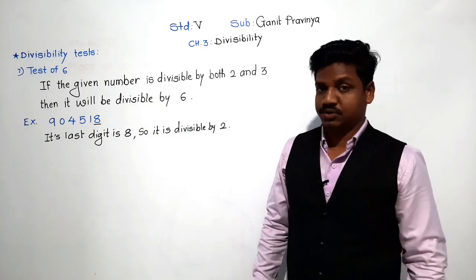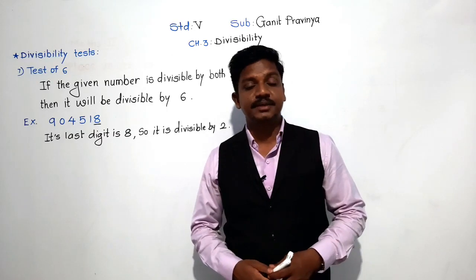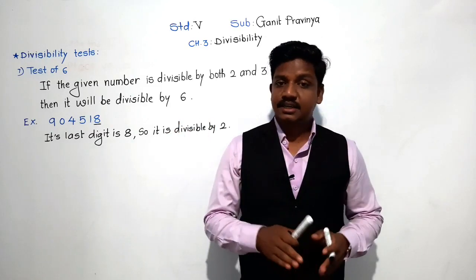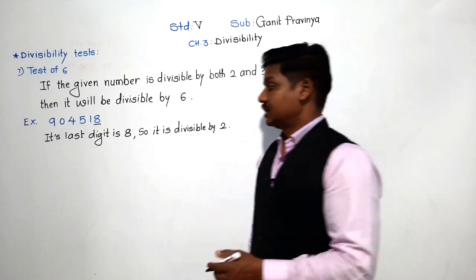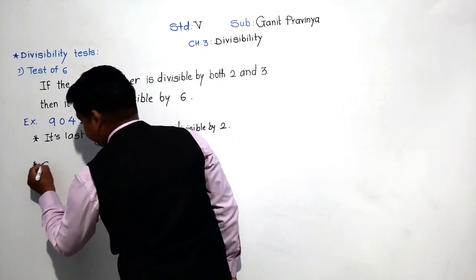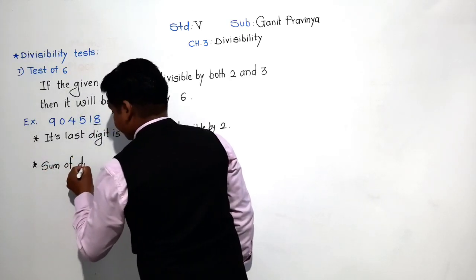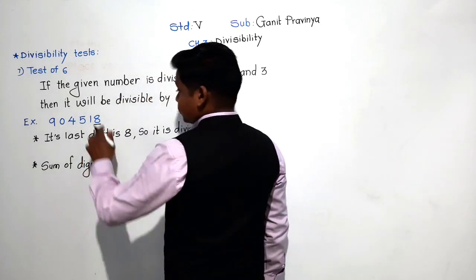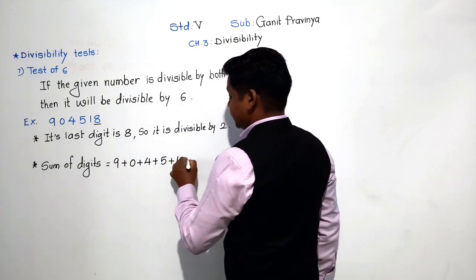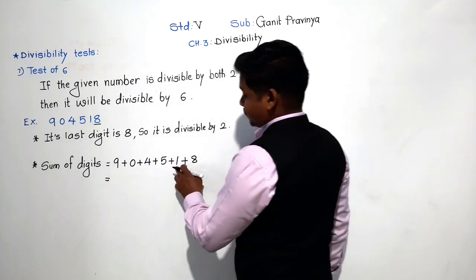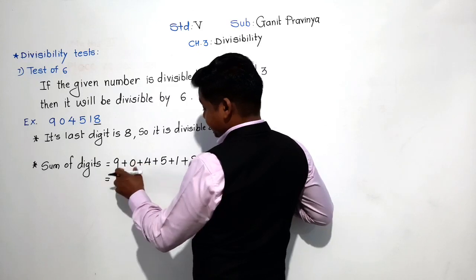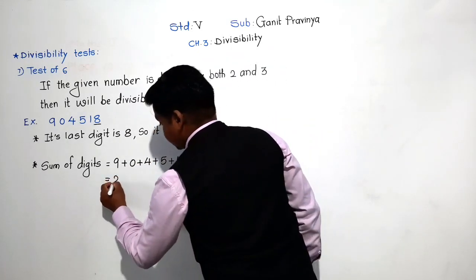Now we will check whether it is divisible by 3 or not. The divisibility test of 3 says: if the sum of digits is divisible by 3, then the given number is divisible by 3. So we find the sum of digits: 9 + 0 + 4 + 5 + 1 + 8. That gives us 8+1=9, 9+9=18, 5+4=9, 18+9=27, 27+0=27. The sum is 27.